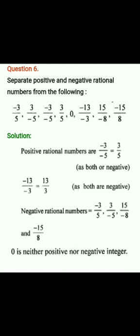Negative rational numbers are -3/5, 3/-5, 15/-8, and -15/8. Zero is neither positive nor negative.